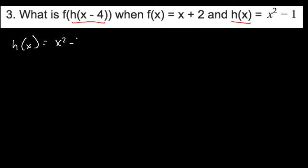So what we're going to do is go ahead and plug in our x minus 4, which we have right here, into our new function x squared minus 1. So we are going to have x minus 4 in parentheses, x minus 4 squared minus 1.